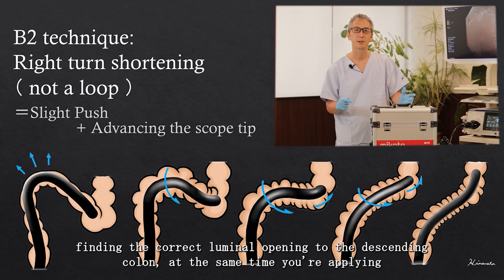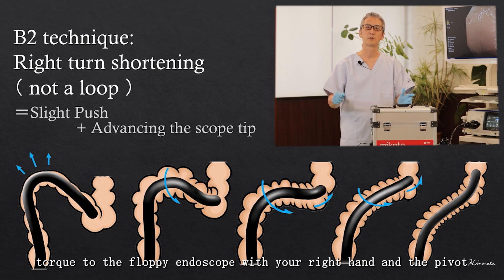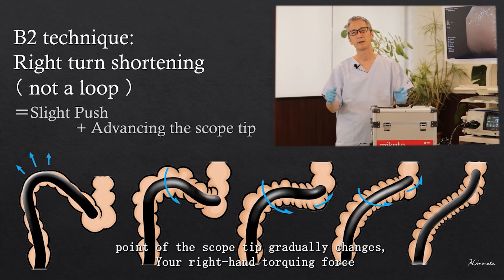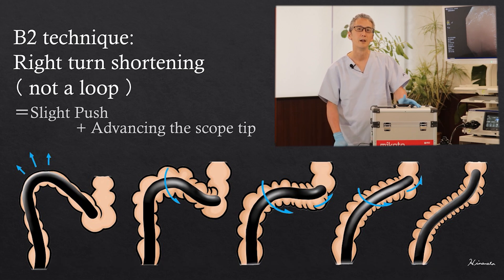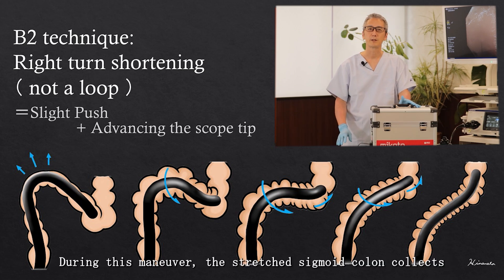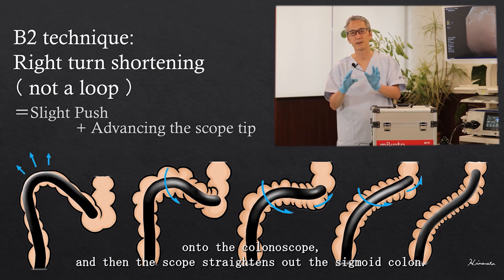At the same time you're applying torque to the floppy endoscope with your right hand, and the pivot point of the endoscope tip gradually changes. Your right hand torquing force makes the scope tip advance further into the descending colon. During this maneuver the stretched sigmoid colon collects onto the colonoscope, and then the scope straightens out the sigmoid colon.